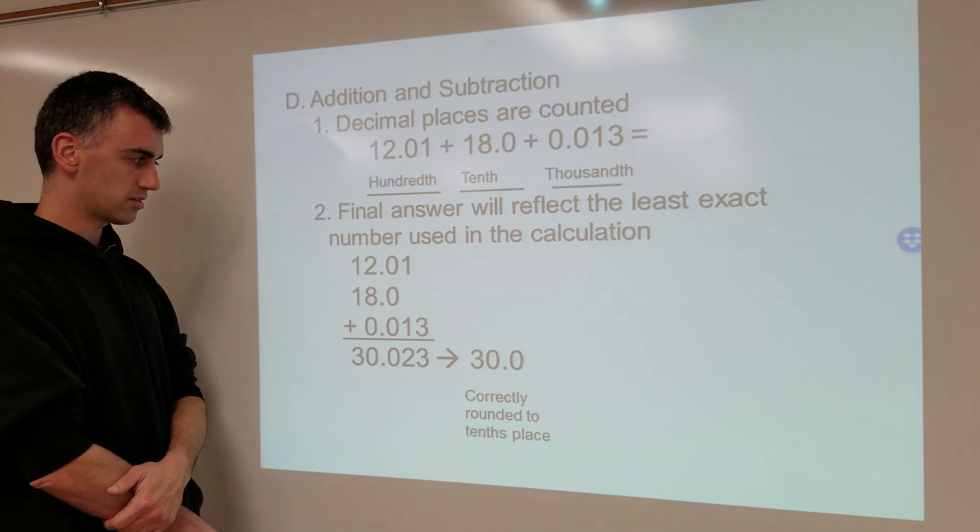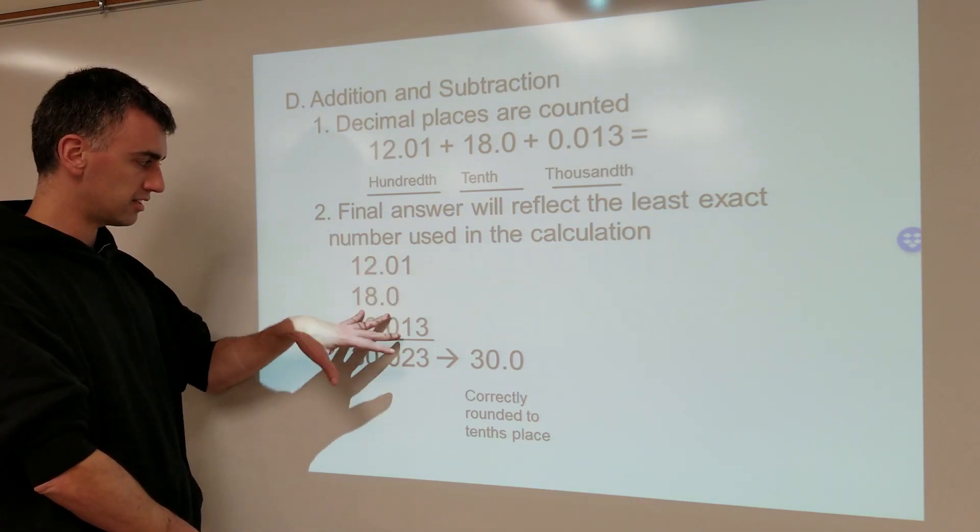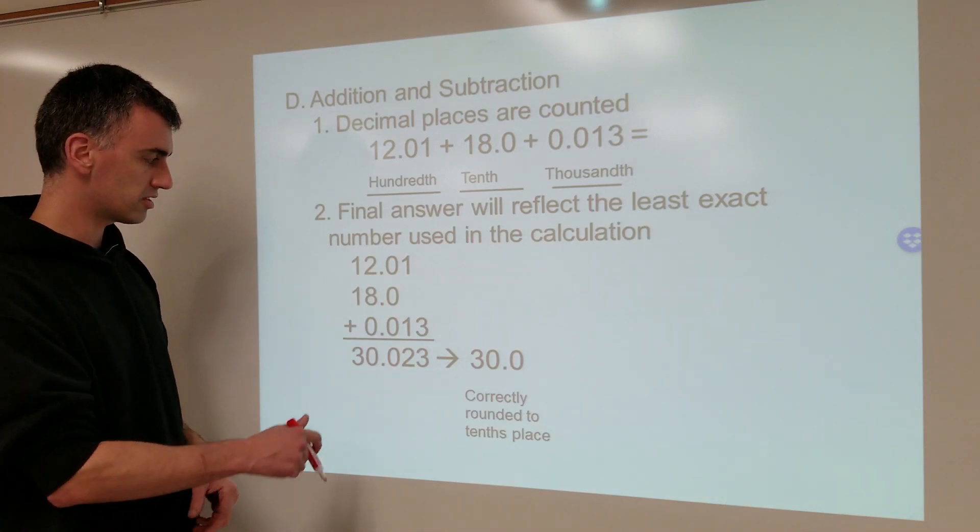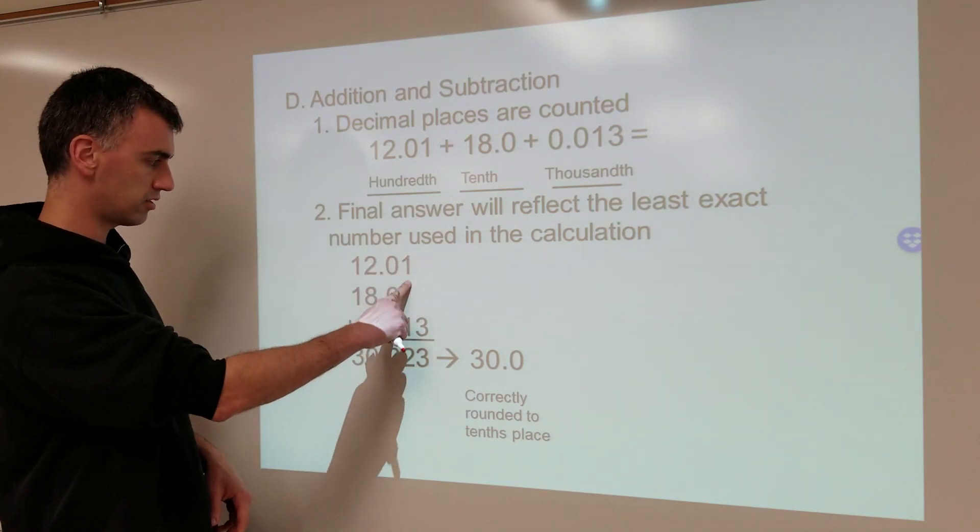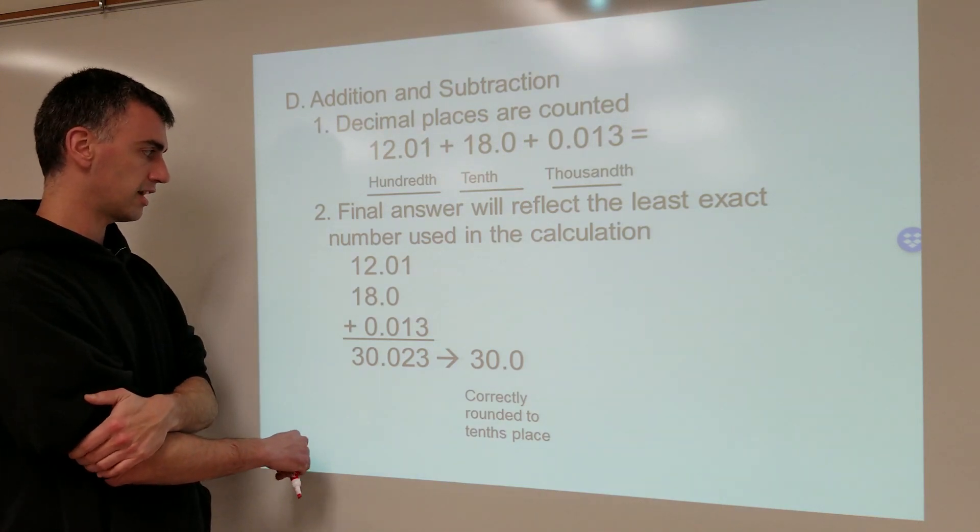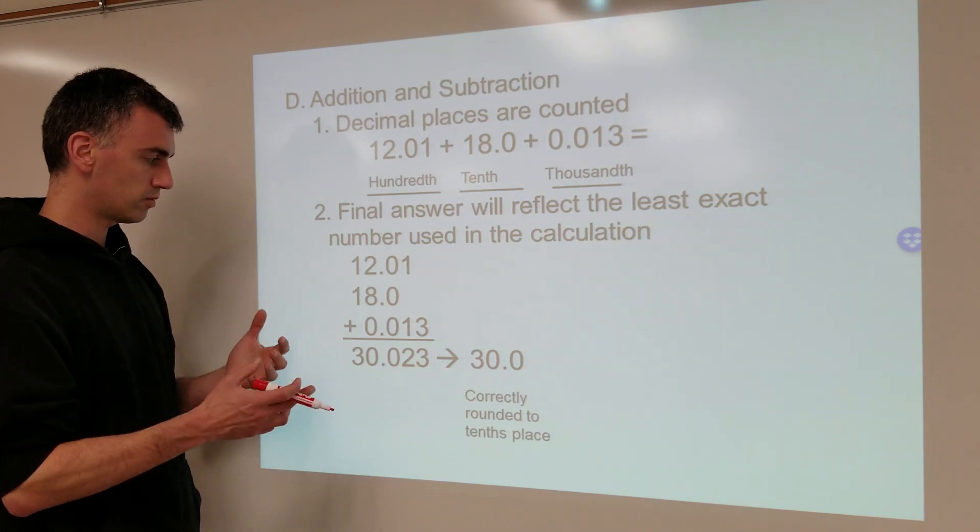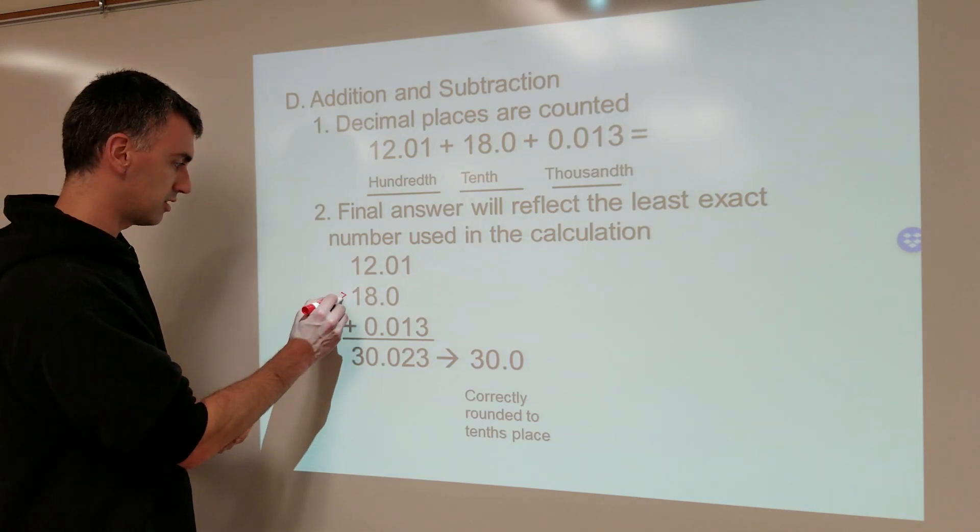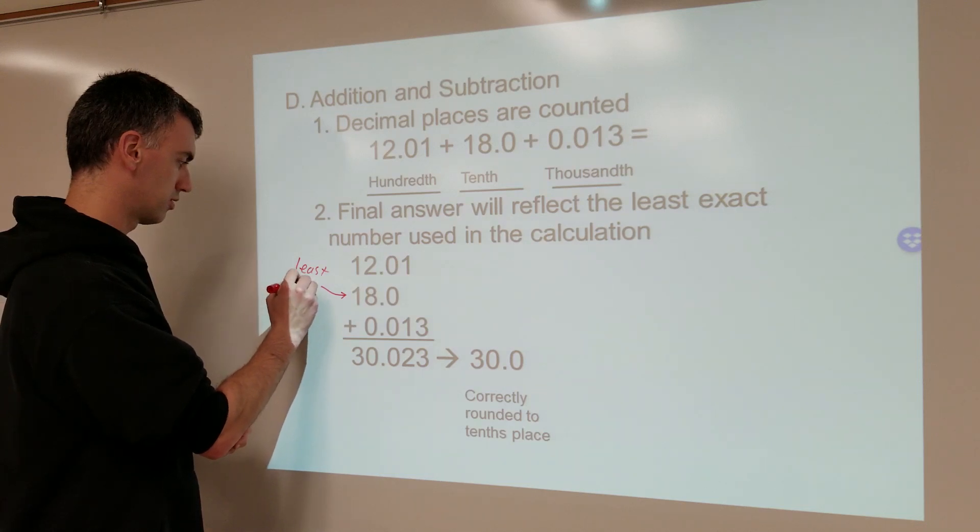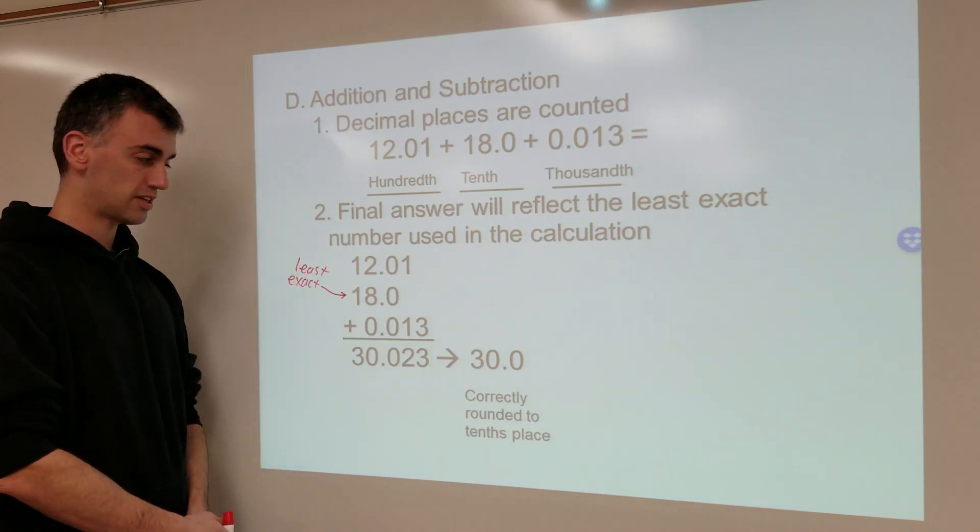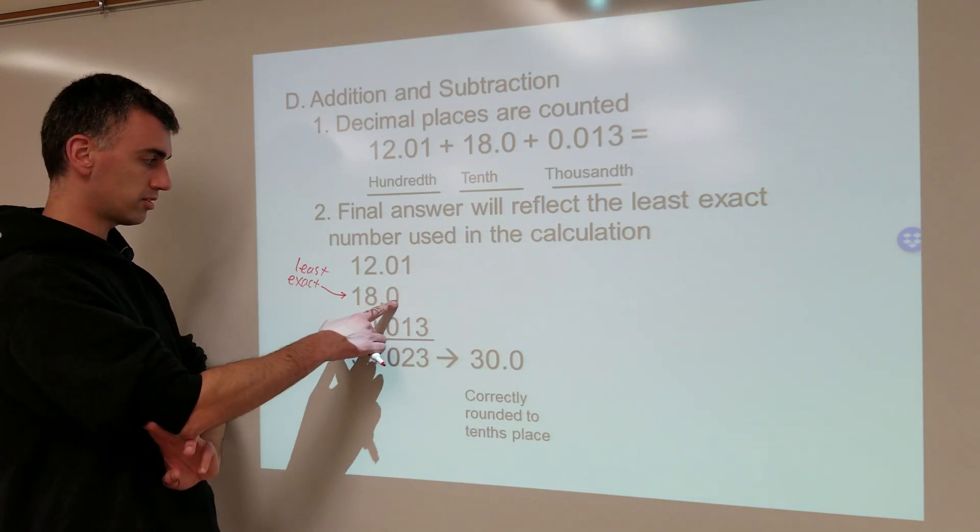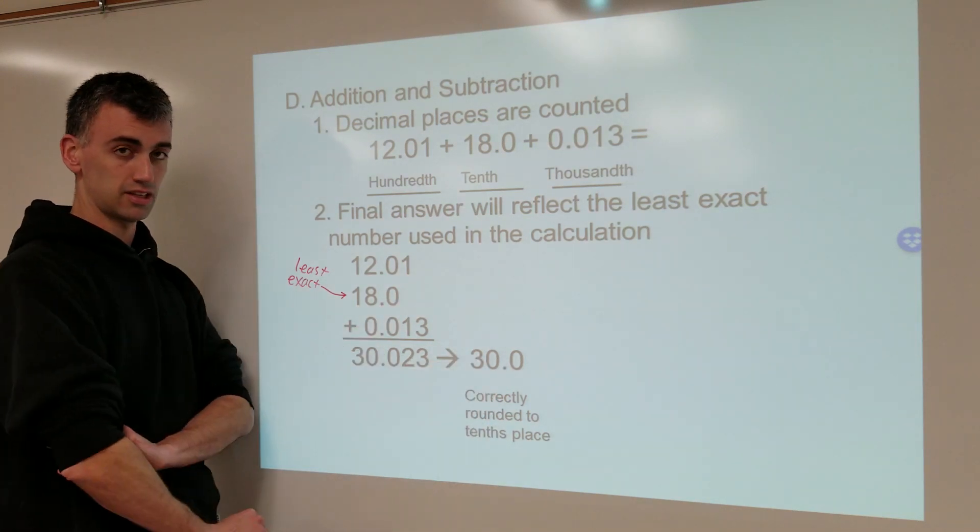And based on this being less exact, we round the final answer to look like this number. The way we go about that is this. You stack up your numbers, you write underneath the final calculated number. Notice how they stack, like the whole number is all in the same place, the tenths place is the same place, the hundredths place is the same place. I'm going to determine which number is the least exact number. This number is the least exact out of all of them, and so it determines how the final answer is rounded. You'll notice they both go to the tenths place. So because the least exact number only goes to the tenths place, the final answer can only go to the tenths place.